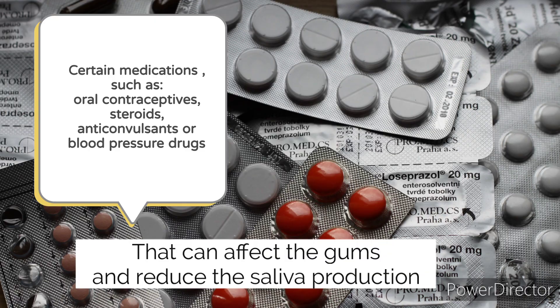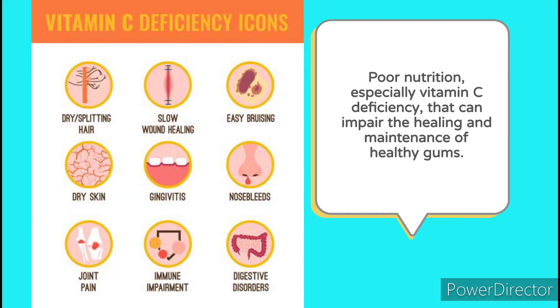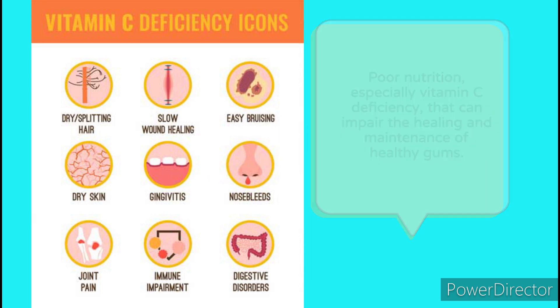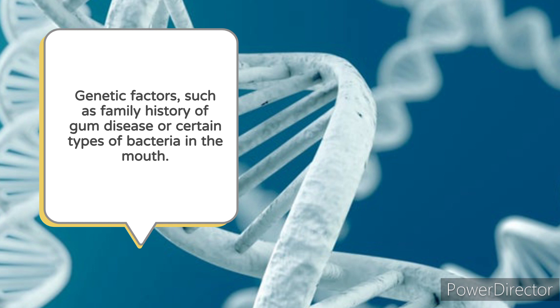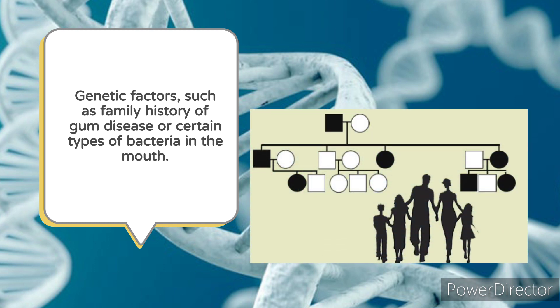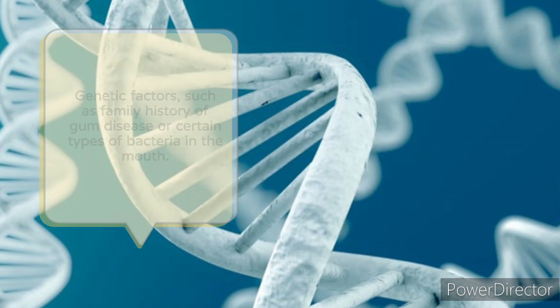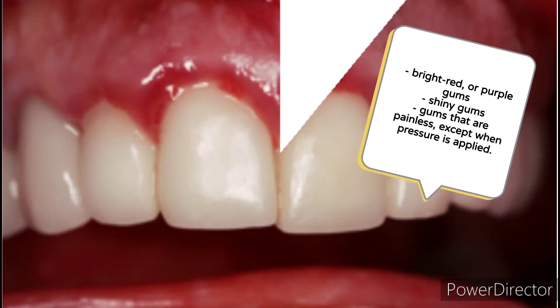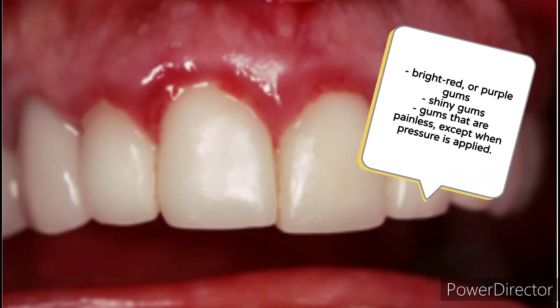Poor nutrition, especially vitamin C deficiency, can impair the healing and maintenance of healthy gums. Genetic factors such as family history of gum disease or certain types of bacteria in the mouth also play a role. Signs and symptoms include bright red or purple gums, shiny gums, and gums that are painless except when pressure is applied.